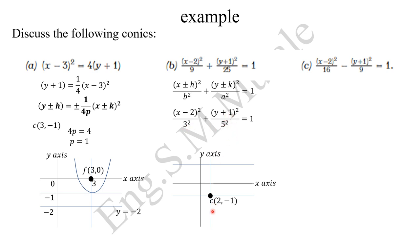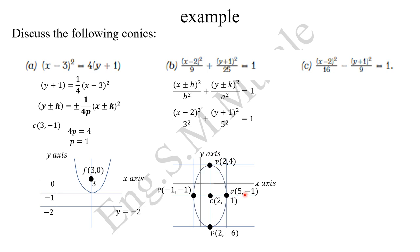From the center (2, -1), going five steps upward in y gives the vertex (2, 4), and going five steps downward gives (2, -6). So the ellipse extends from (2, -6) to (2, 4) along the major axis. For the minor vertices, moving b = 3 steps to the right gives (5, -1), and three steps to the left gives (-1, -1). That defines our translated ellipse.